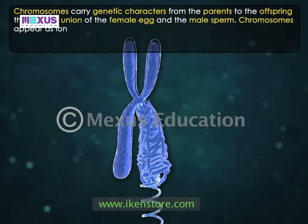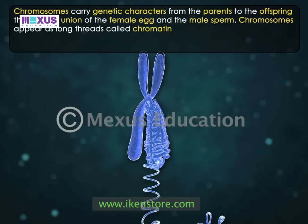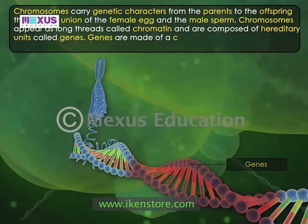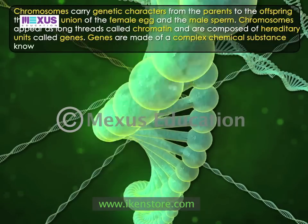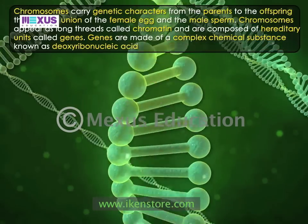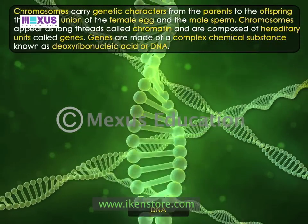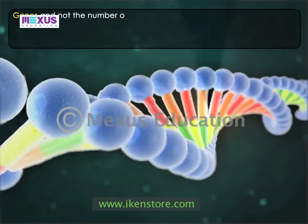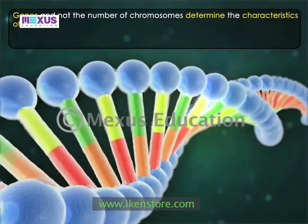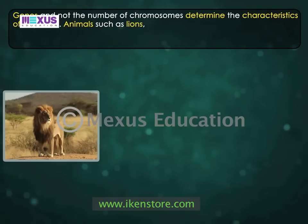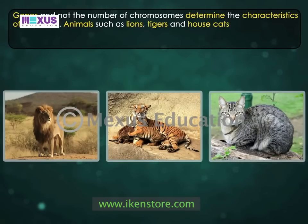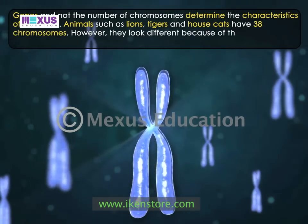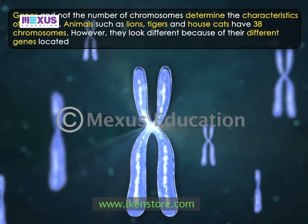Chromosomes appear as long threads called chromatin and are composed of hereditary units called genes. Genes are made up of a complex chemical substance known as deoxyribonucleic acid or DNA. Genes and not the number of chromosomes determine the characteristics of a species. Animals such as lions, tigers and house cats have 38 chromosomes, however they look different because of their different genes located on these chromosomes.